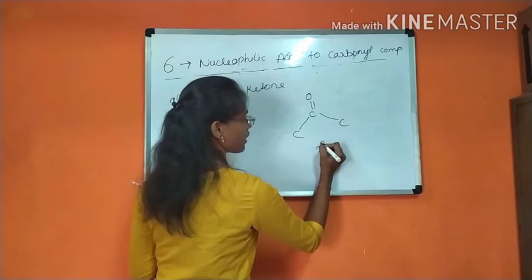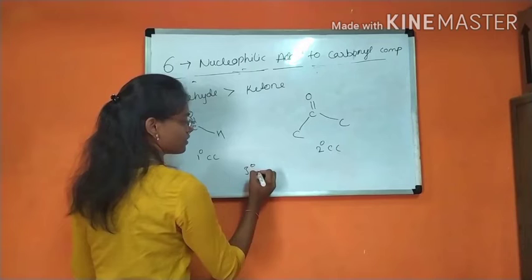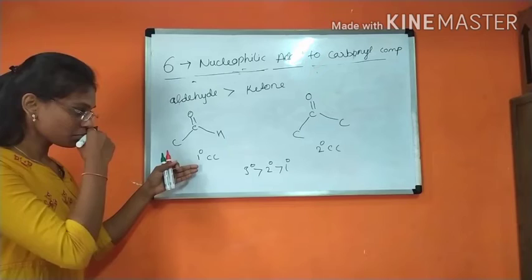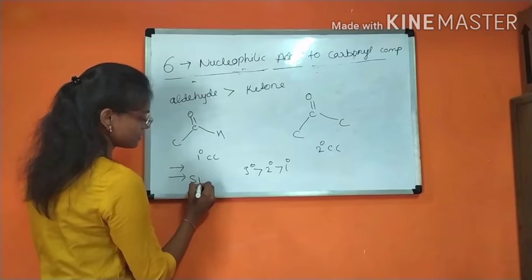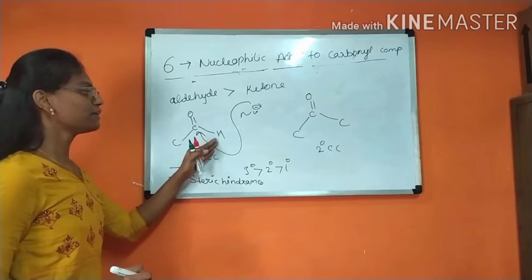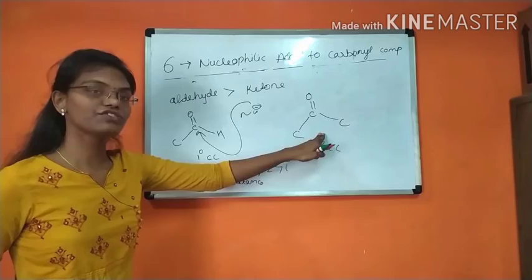The cation formed in aldehyde is a primary carbocation, whereas the cation formed in ketone is a secondary carbocation. This secondary carbocation is stabilized by adjacent R groups, whereas in aldehyde no such stabilization takes place. Tertiary carbocations are more stable than secondary, and secondary more stable than primary. The more stable the compound, the lesser the reactivity. Since the carbocation in aldehyde is less stable, its reactivity is high compared to ketone.